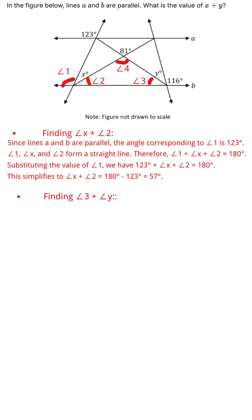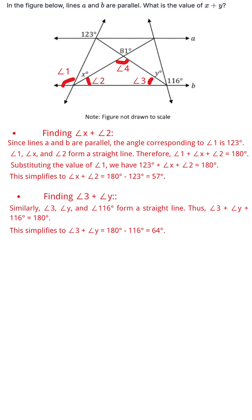Step 2: Finding angle 3 plus angle y. Similarly, angle 3, y, and 116 degrees form a straight line. Thus, angle 3 plus angle y plus 116 degrees equals 180 degrees. This simplifies to angle 3 plus angle y equals 180 minus 116 equals 64 degrees.